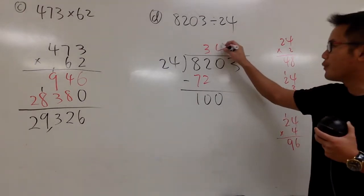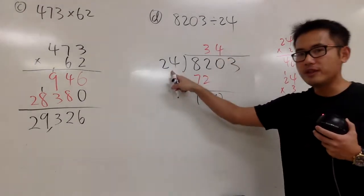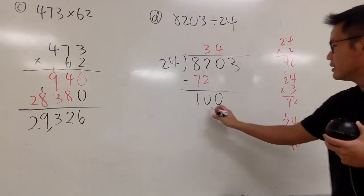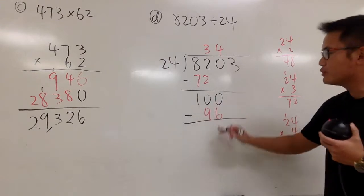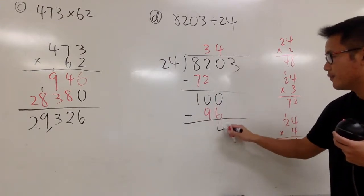So if I put down 4 here, 4 times 24, we get 96. And then we can proceed with subtract. 100 minus 96, we get 4.